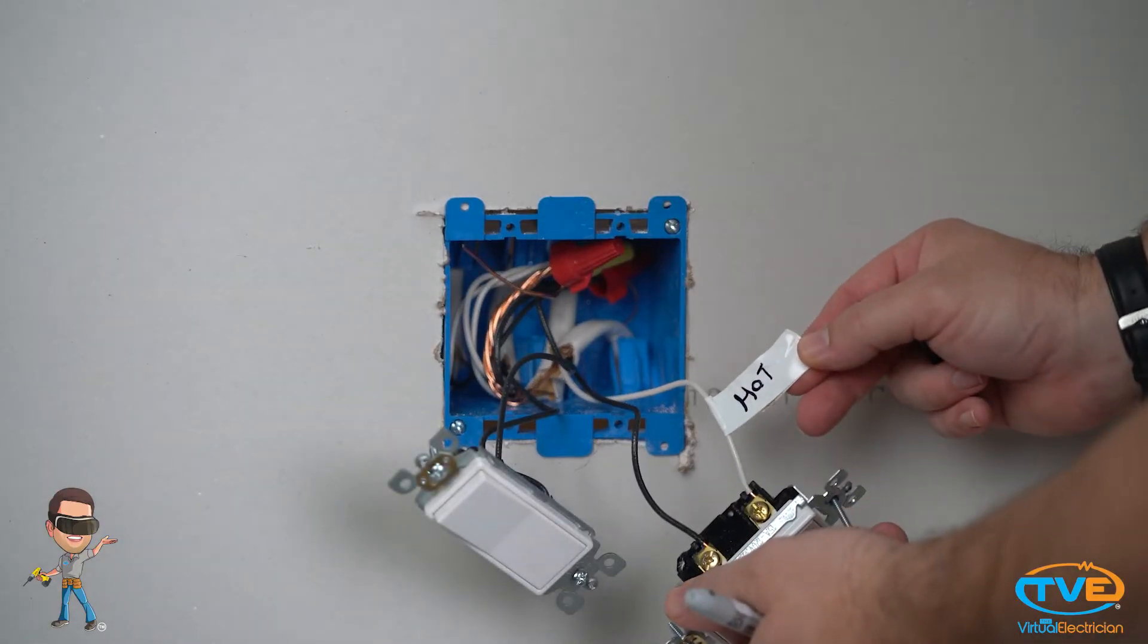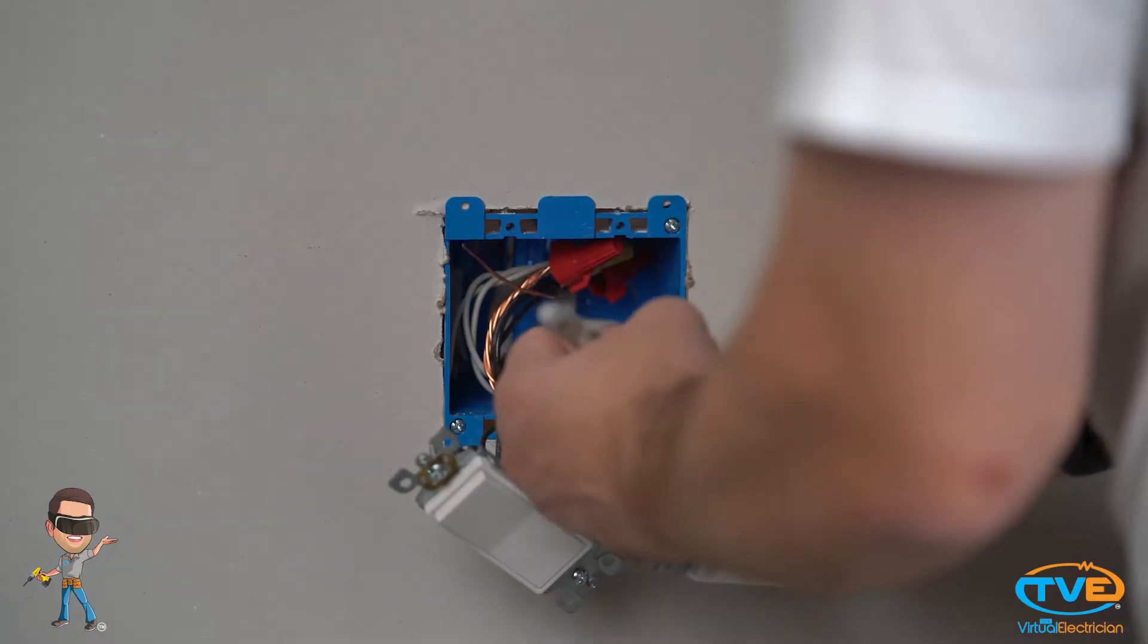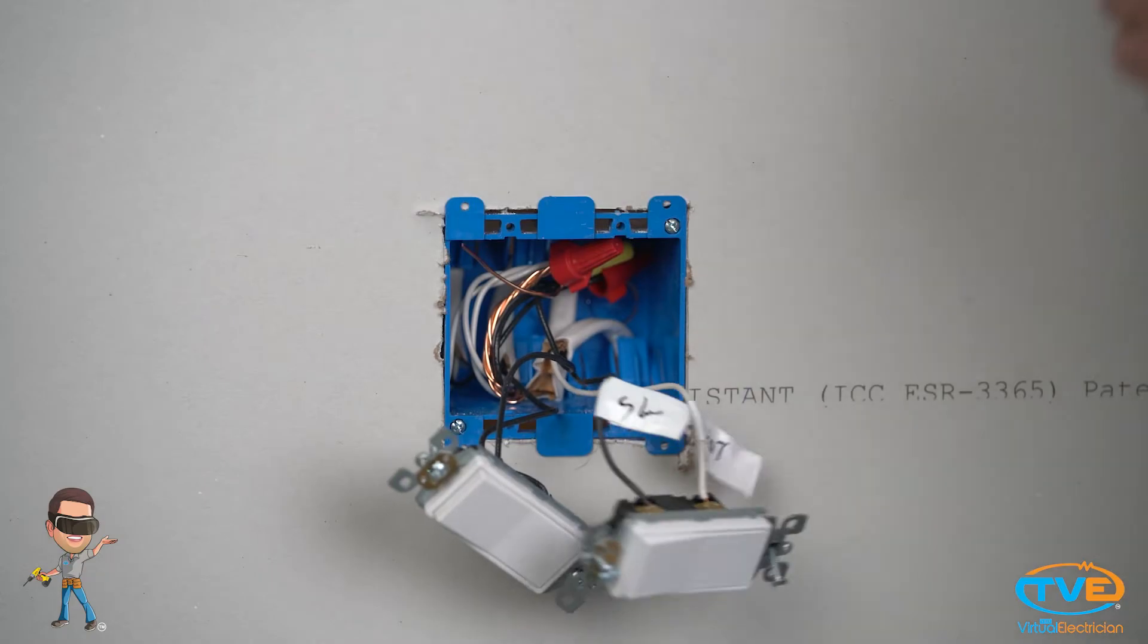Now it's time to take out the old switches. Make sure you mark which wires go where. Identify which are the hots, which are the switch legs using a white piece of electrical tape. It's also a good idea to take a picture of the connections so you can refer back to them.